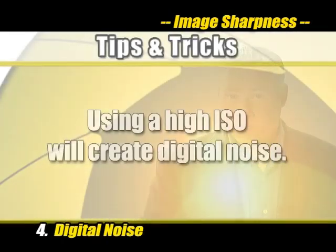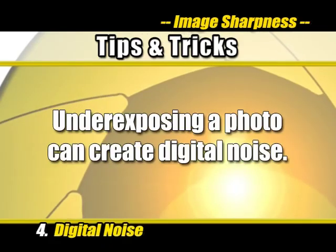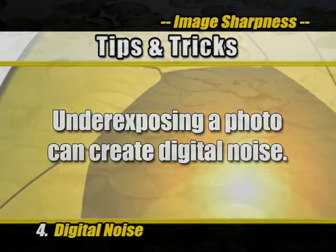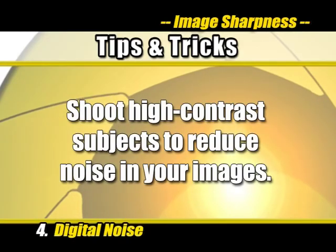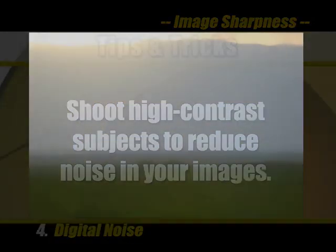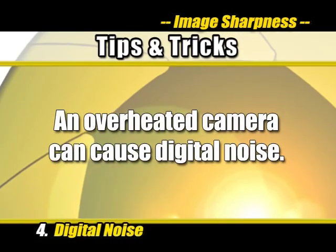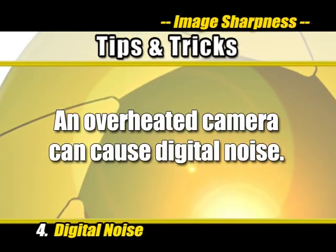Too high of an ISO setting can create noise in your image. Underexposing your photos — too much black — will come across as gray or noisy, so don't underexpose your photos. Another way to keep noise out of your image is to shoot high contrast subjects, as gradual gradations like the sky's changing blue colors cause grain-like patterns in the image. Finally, allow your camera to cool off before shooting more pictures, as an overheated image sensor will add noise to your image.